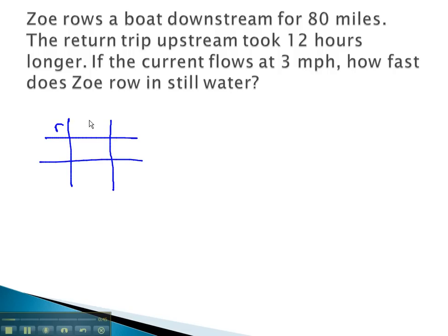In this problem, we know rate times time equals distance, and Zoe rows for 80 miles downstream. We don't know the time she travels, but we know that when she goes downstream, the water is pushing her, making her go faster at a rate of 3 miles per hour.